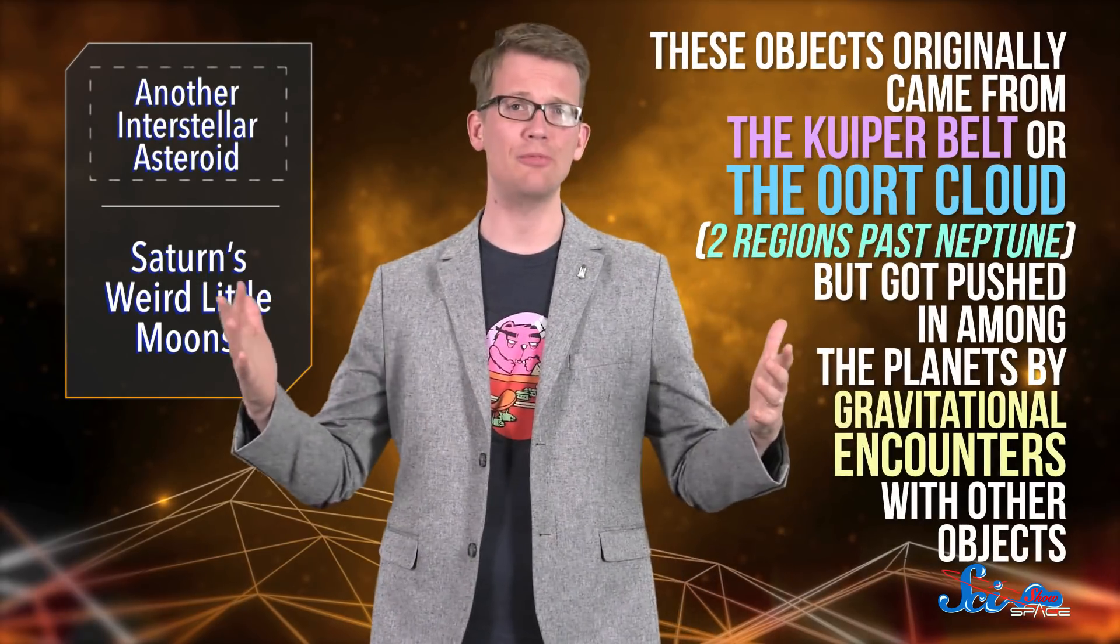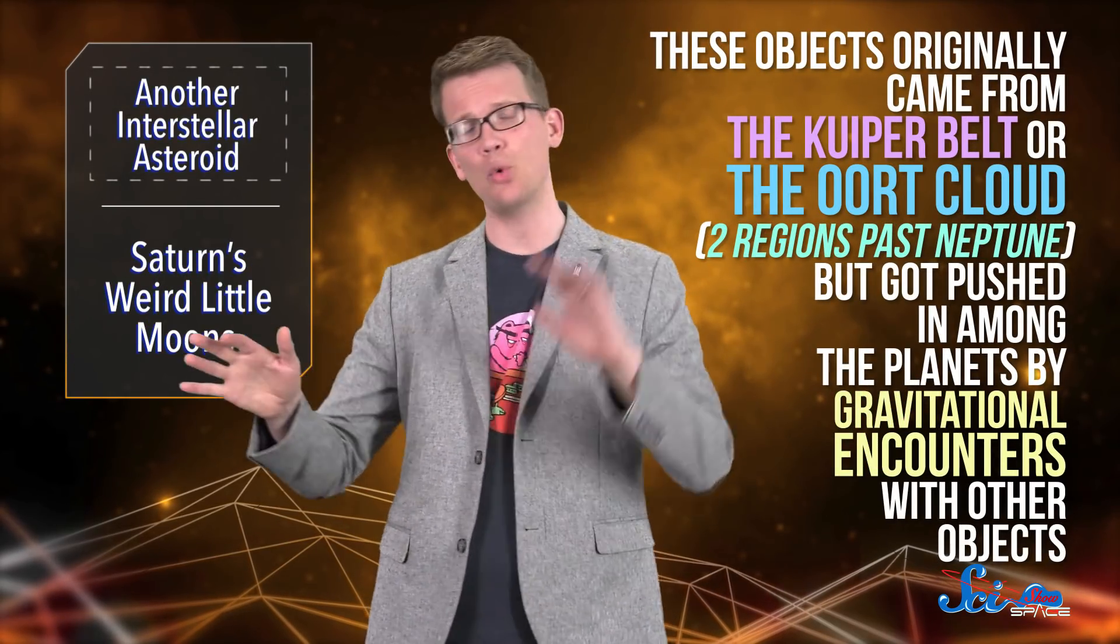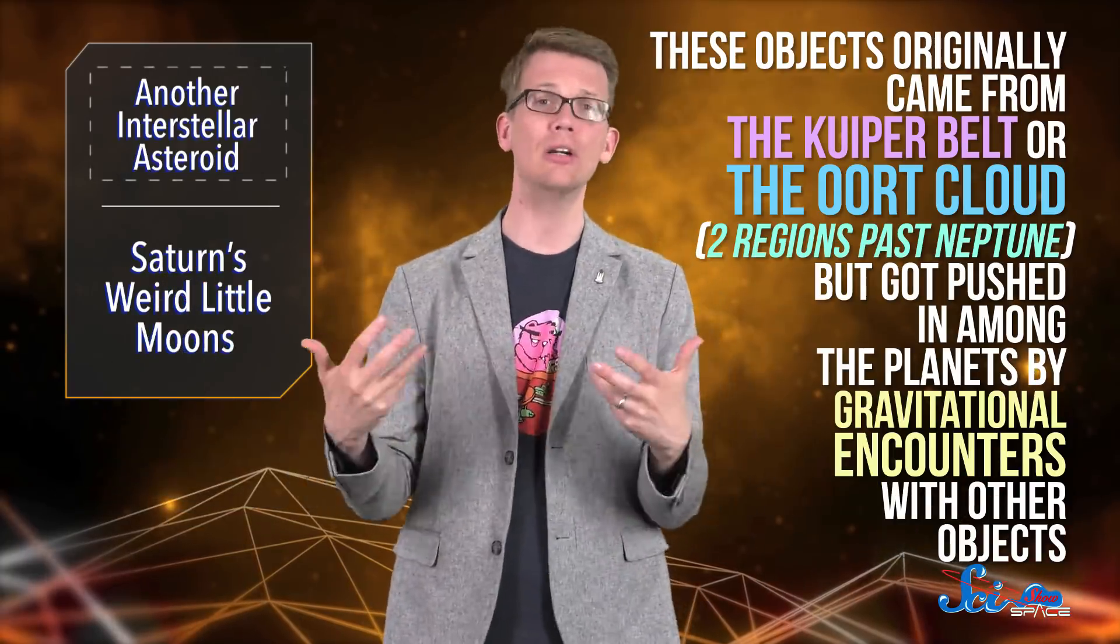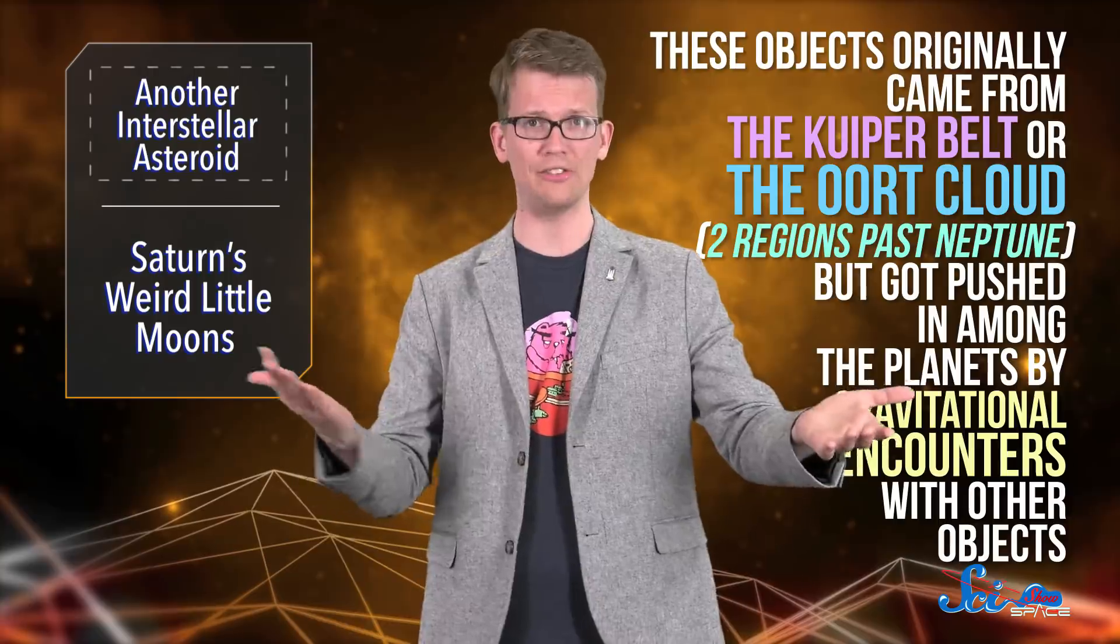For the most part, scientists believe these objects originally came from the Kuiper Belt, or the Oort Cloud, two regions past Neptune, but got pushed in among the planets by gravitational encounters with other objects. Because of all that, their orbits are pretty chaotic.